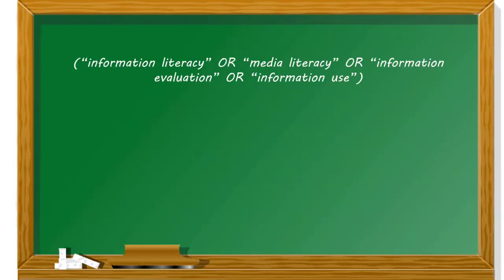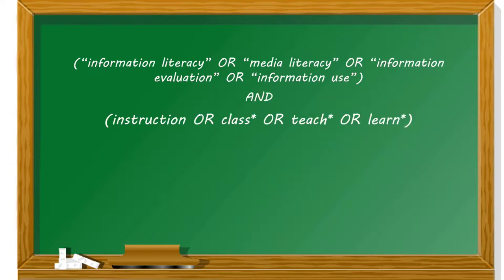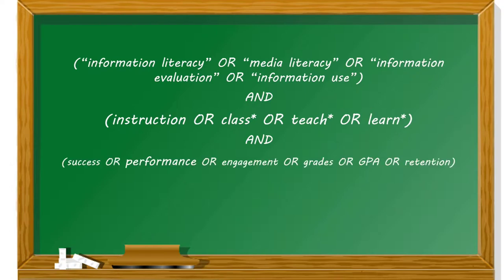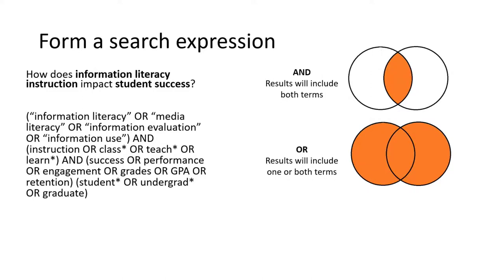First, we create a parentheses and add in our list of information literacy terms separated by OR. Notice the quotation marks I've put around the words I want to find together. Next, we add AND, then the terms for instruction, and so on. Once these are all typed out, I can put them into one large search string. You can copy and paste this directly into the library databases for your searches.